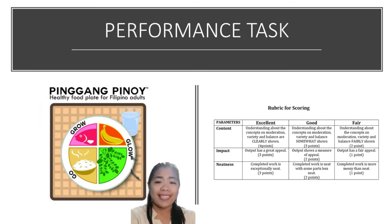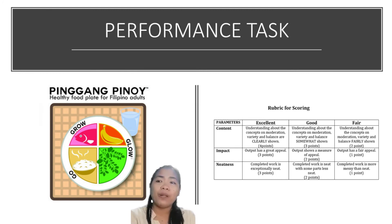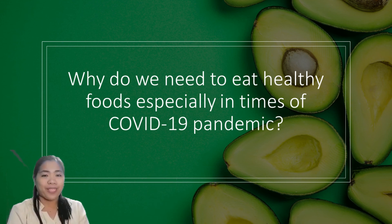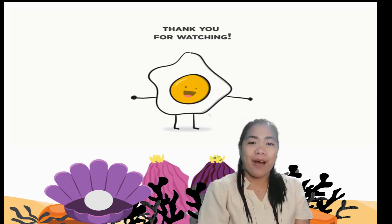For your performance test, you are asked to create a meal plan by following the Pinggang Pinoy guide and showing examples of food which contain carbohydrates, proteins, and lipids. This will be included in your diet to maintain a healthy lifestyle. Home question: Why do we need to eat healthy, especially in times of the COVID-19 pandemic? Consider all the discussions on biomolecules. This is the end of our discussion. Thank you!